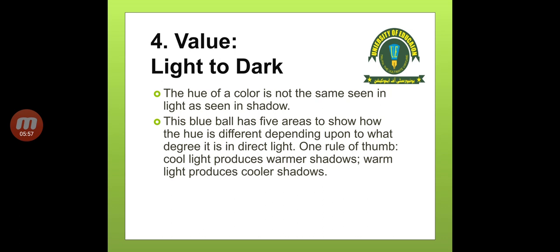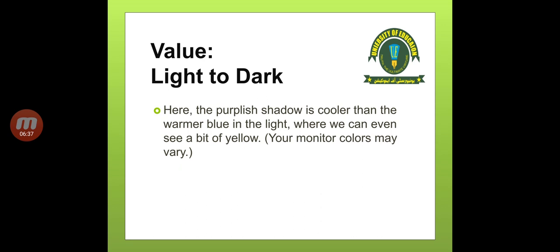This blue ball has five areas to show how the hue is different depending upon the degree to which it is in direct light. One rule of thumb: cool light produces warm shadows, and warm light produces cooler shadows. The change in hue due to light or dark is a matter of its lightness and darkness. Here I will show you a blue ball in the next light, which has five areas to show how the hue is different depending upon what degree the direct light is falling on it. Where there is cool light, a warm shadow will be created, and where there is warm light, a cooler shadow will be created.